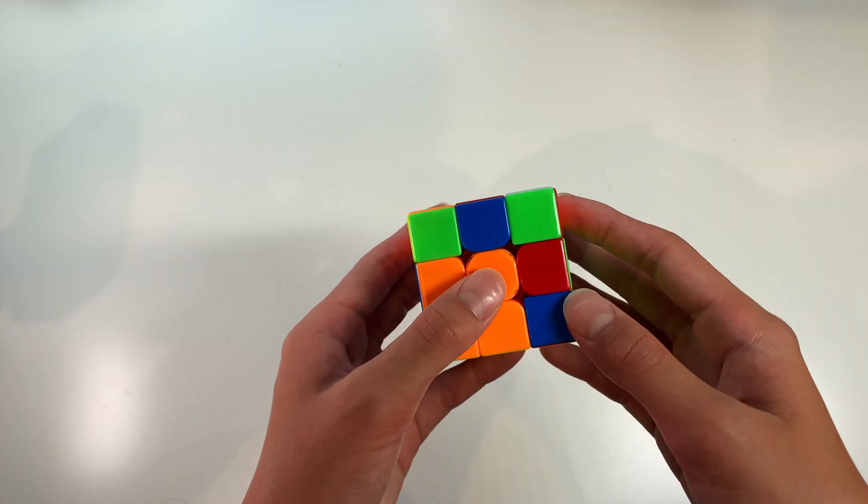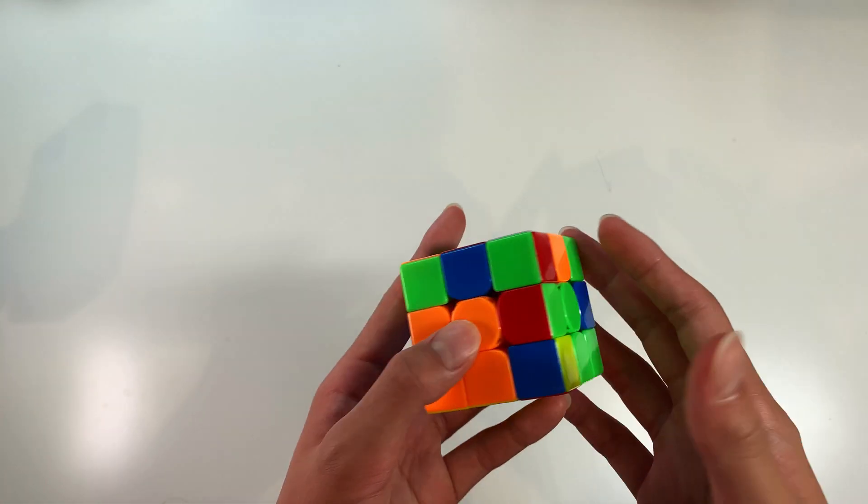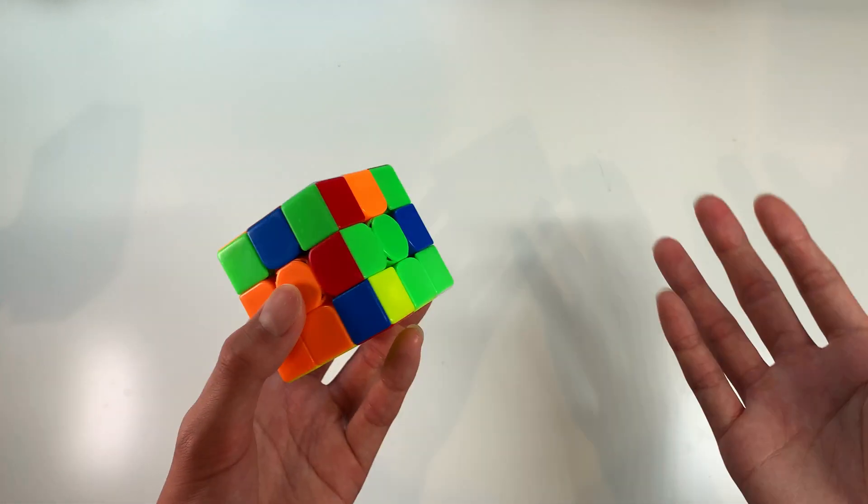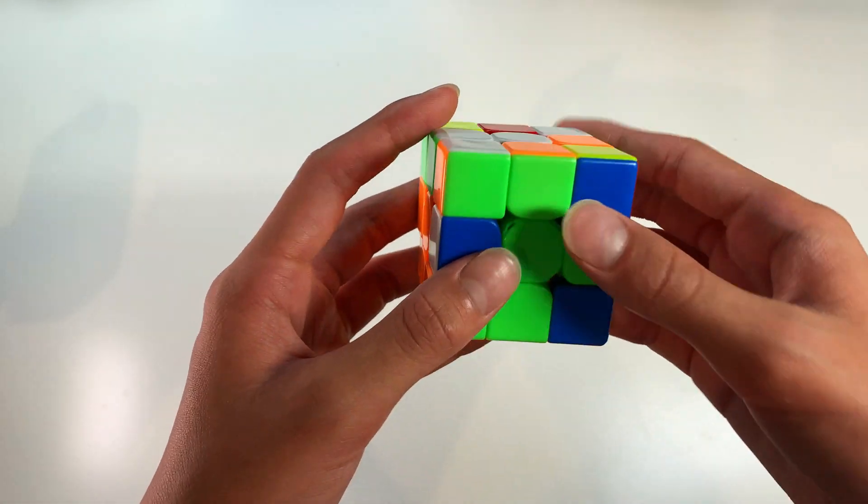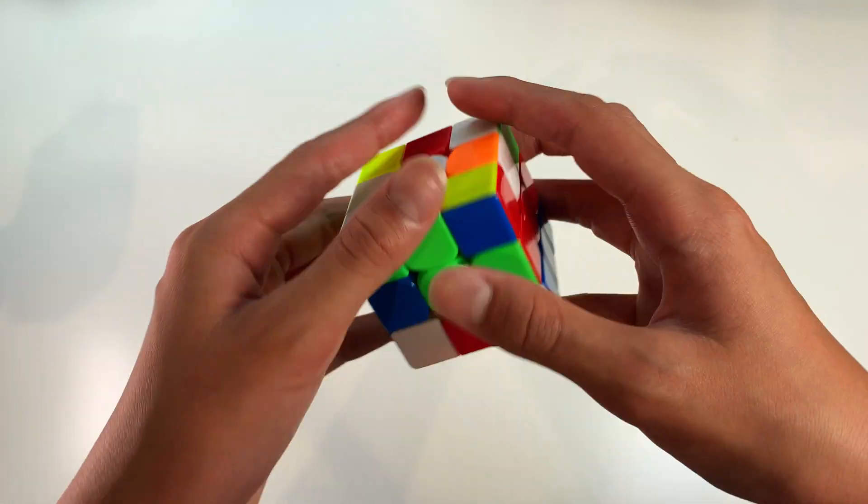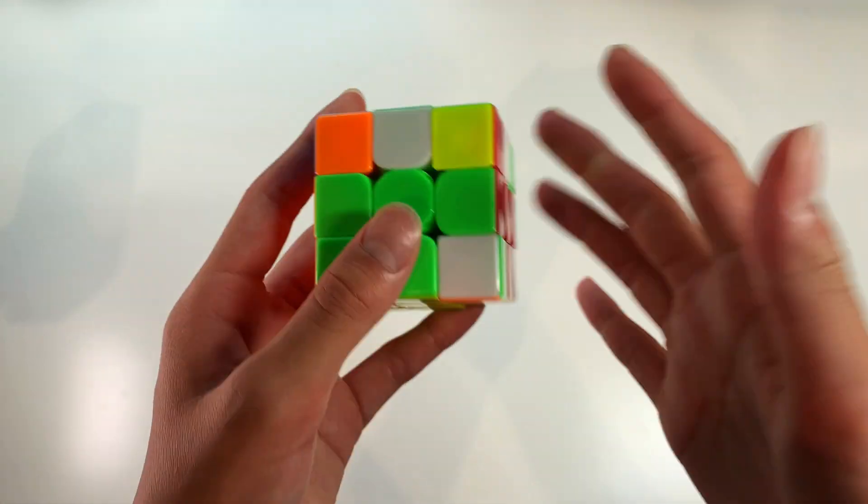But keep in mind that keyhole sometimes messes up some other pairs so you can't always use it especially if you're in the last slot or second last slot. But remember whenever you're doing an edge make sure you put an unsolved corner below it. That way you'll make sure that you preserve all your other pairs.